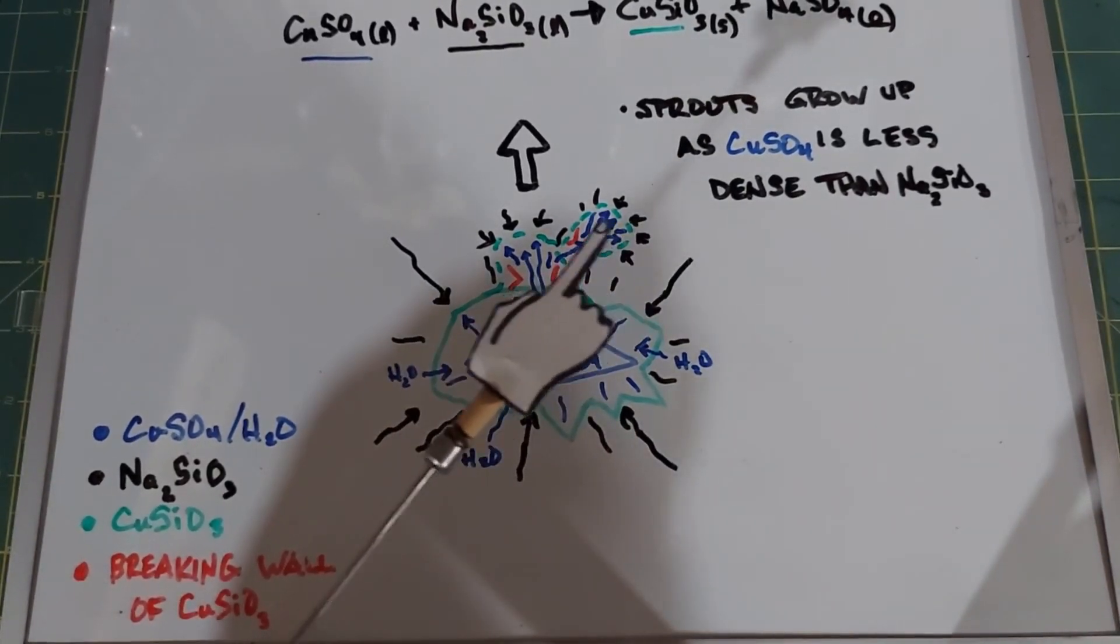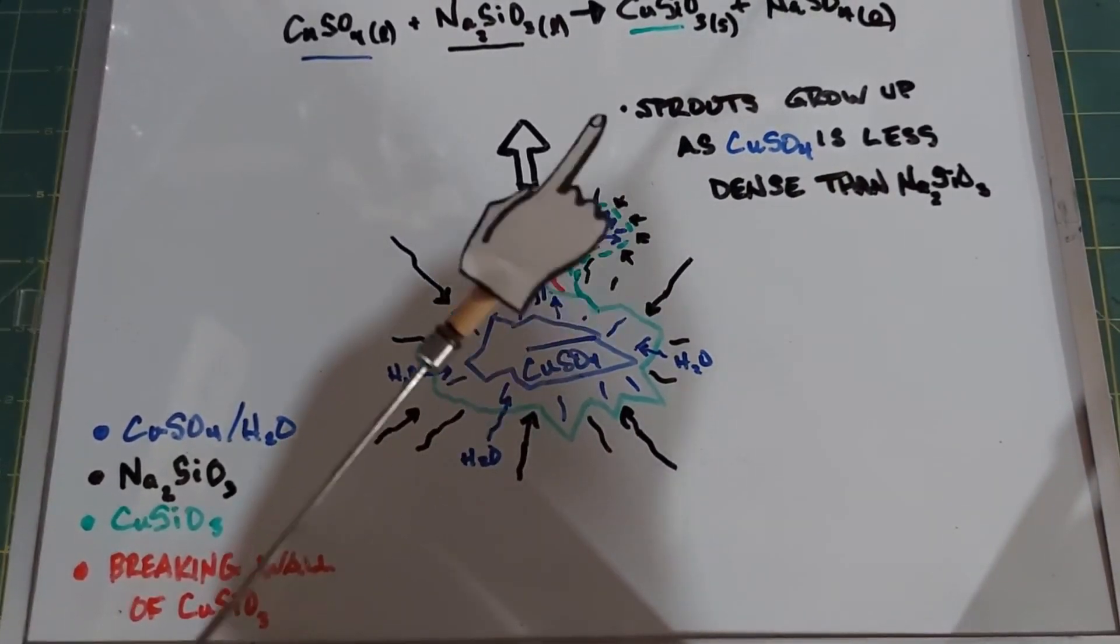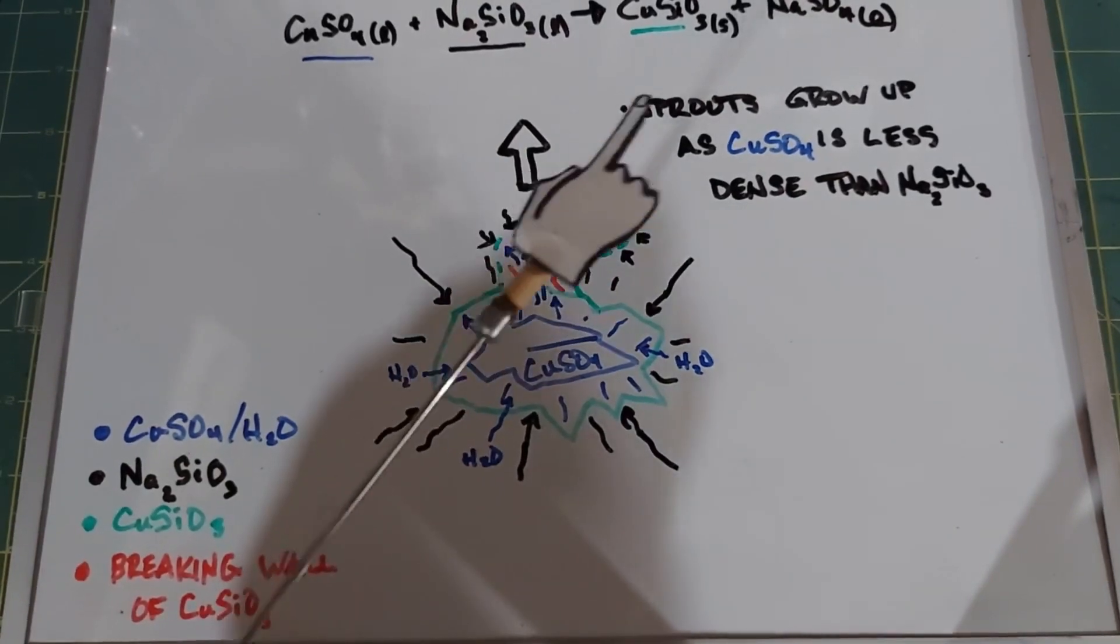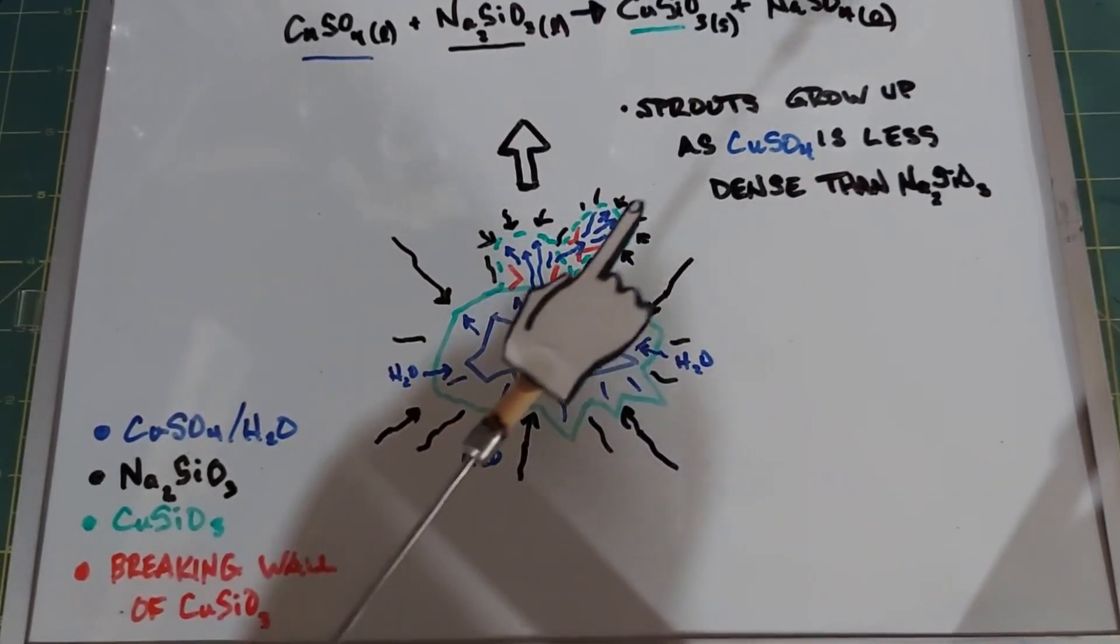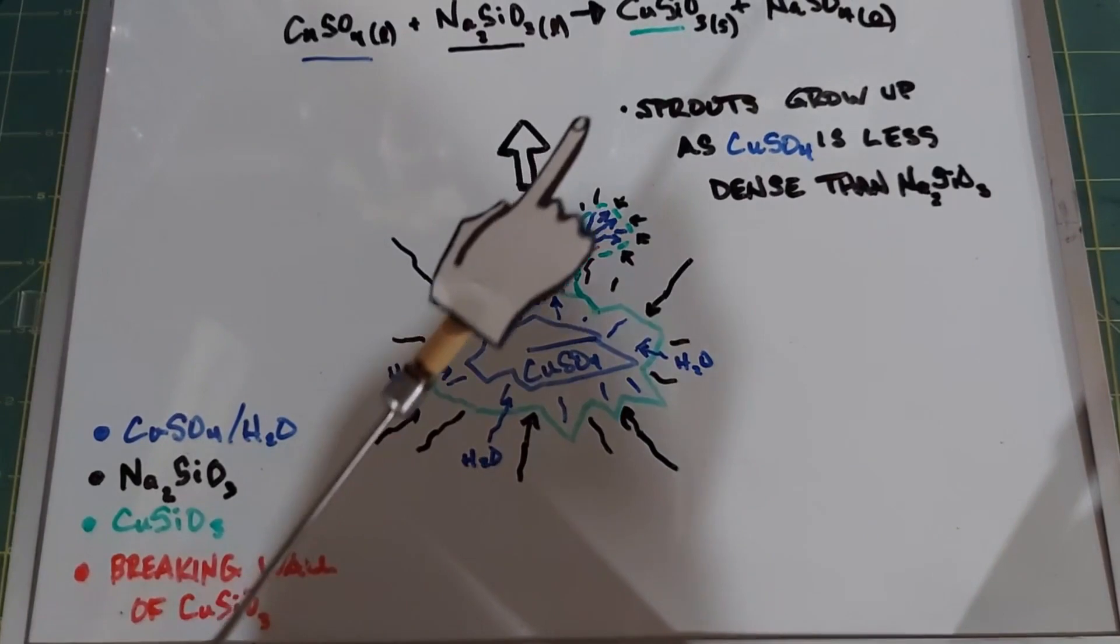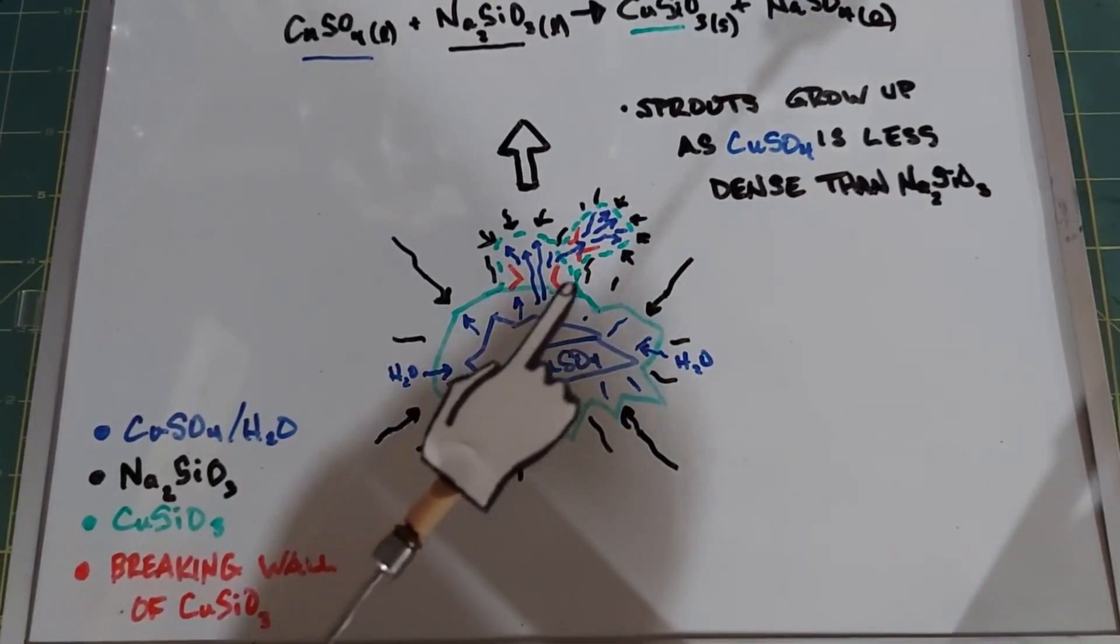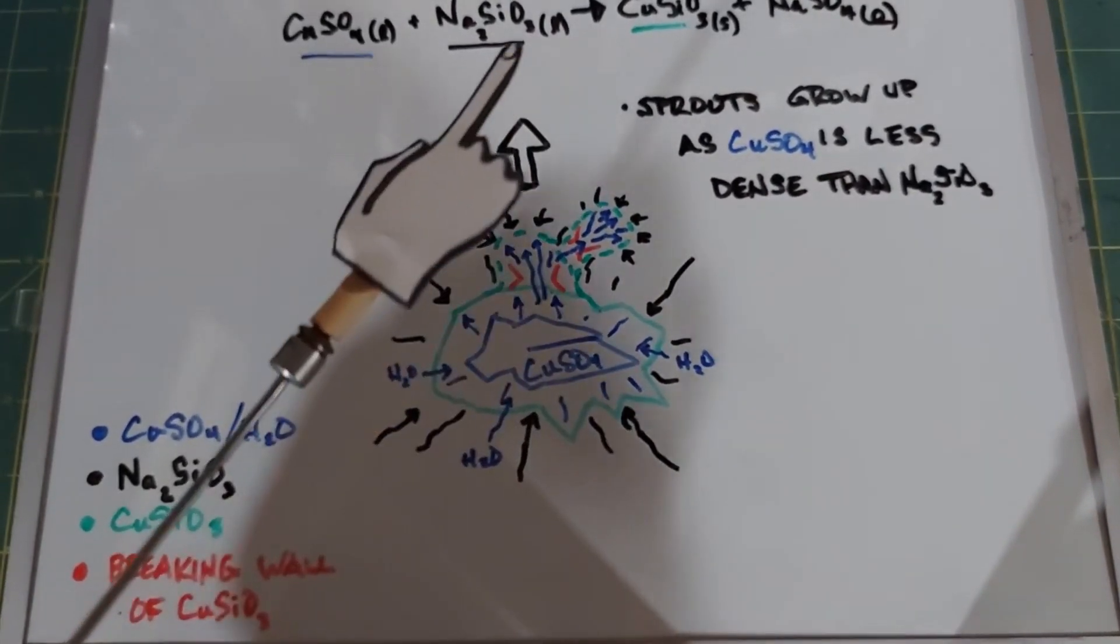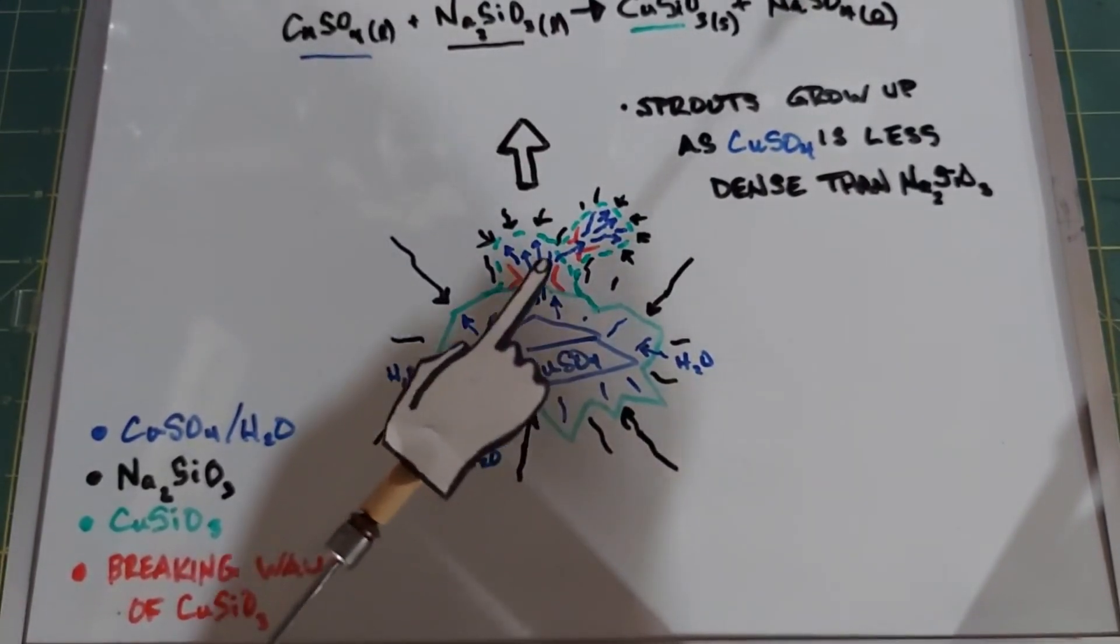The same thing happens again, water leaks through, slowly builds up the pressure, and the copper silicate wall breaks again allowing fresh copper sulfate to come through. It bumps into the sodium silicate again and forms another wall of copper silicate. The water leaks through and breaks it open and as this happens this appears to grow but really it's just the breakages along this whole path that allow it to look like it's growing.